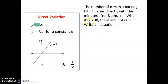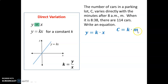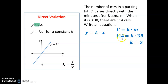Using all that information, you should be able to answer this question. What equation can you write for this one? The number of cars in the parking lot, c, varies directly with the number of minutes after 8 a.m., which we'll use m for. So we know this is direct variation, and we can write c equals k times m — no y-intercept. We can find k by dividing y values by x. Dividing 114 by 38 — 114 is the number of cars, and 38 is 38 minutes after 8 — we get k equals 3. So our model is c equals 3m. That's our direct variation model for this situation.